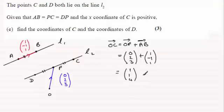Remember though, we were asked for the coordinates of C. So this answer here isn't a coordinate, it's a position vector. The coordinates of C would be (1, 1, 4), written like that.